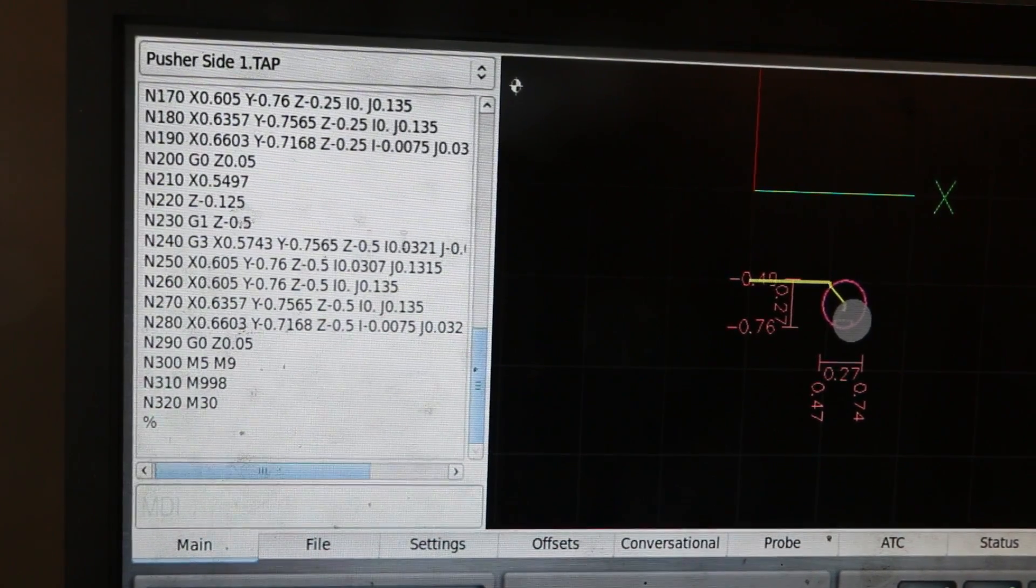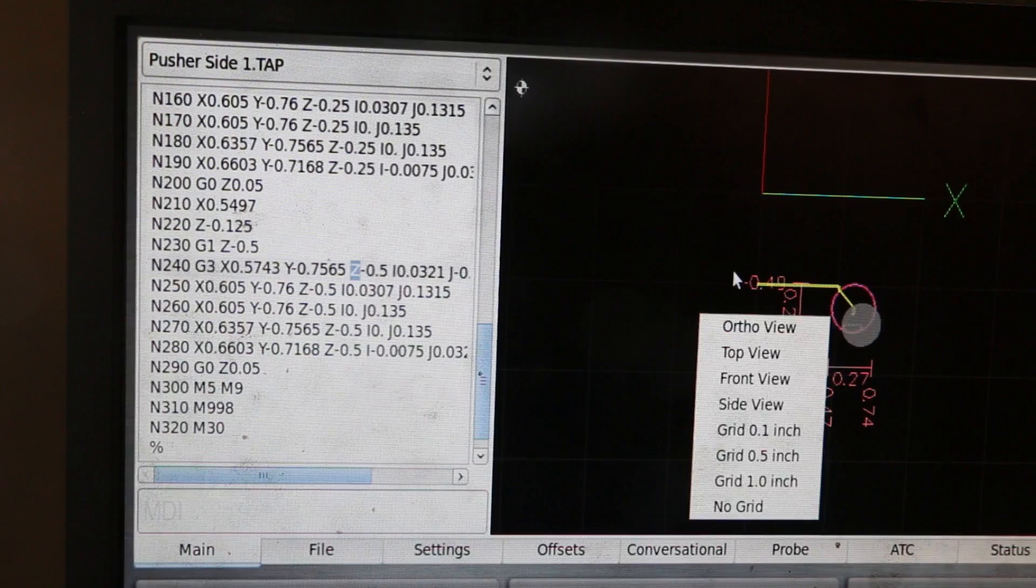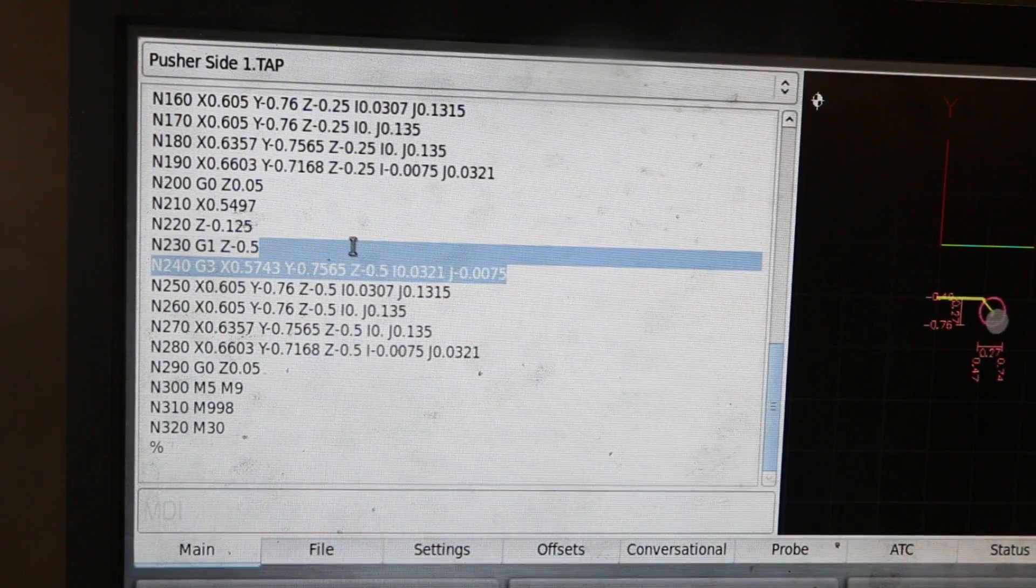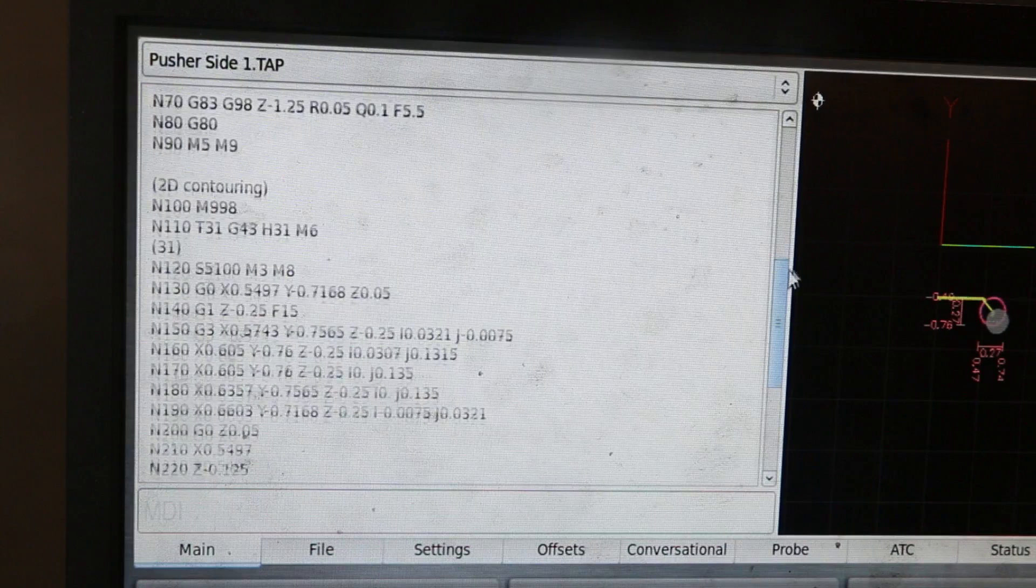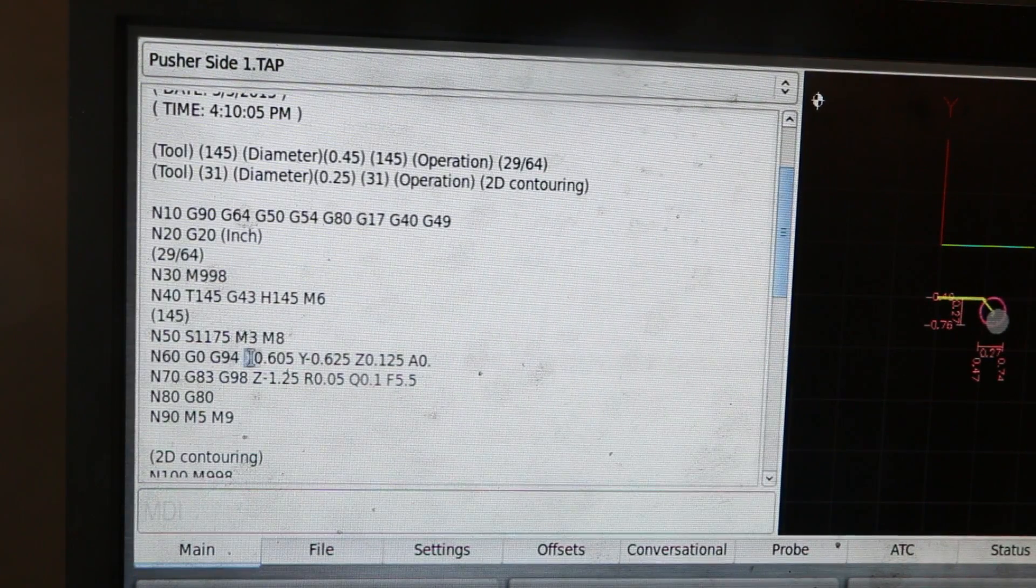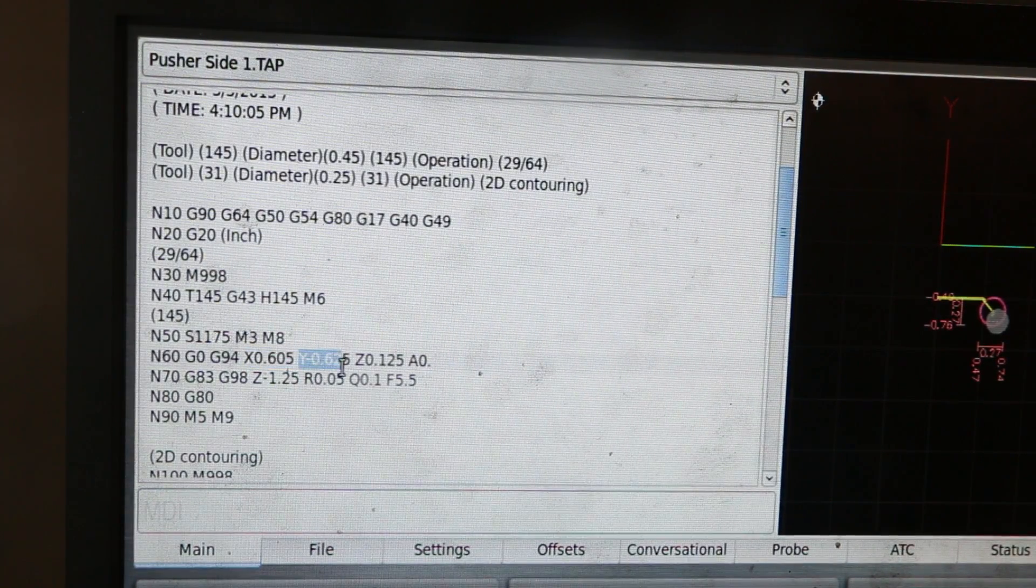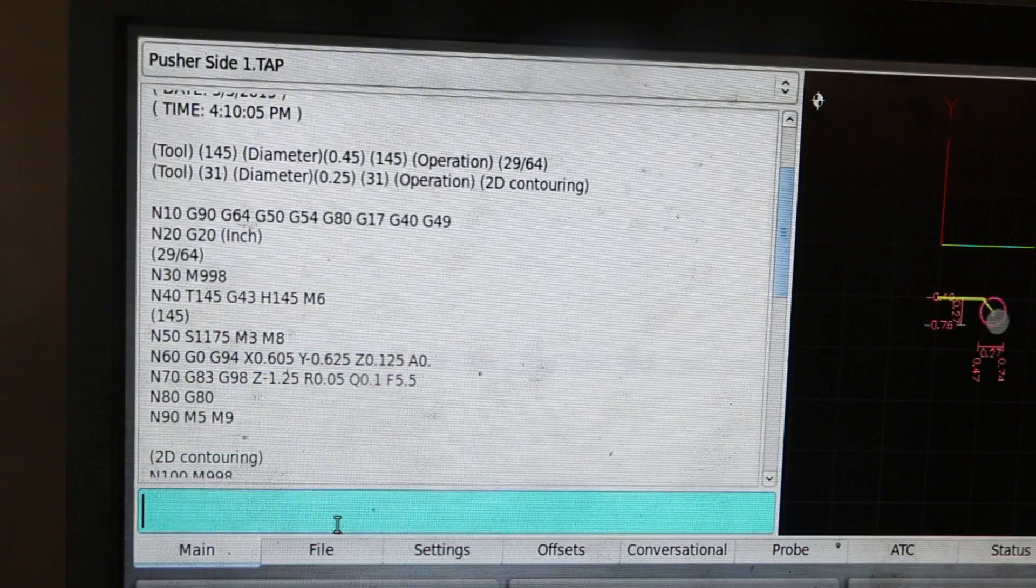As I was mentioning, you can manipulate PathPilot while the program is running, which is great. Changing the view to double-click expands the G-code. If we do that and look at the drill cycle, we can see it goes to X 605, Y negative 625. So let's just go ahead and do that.